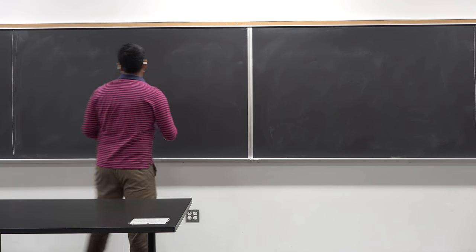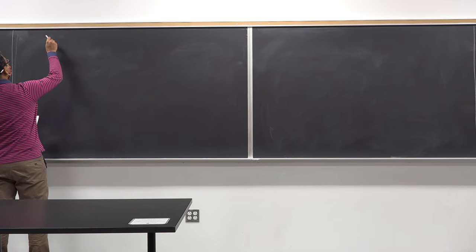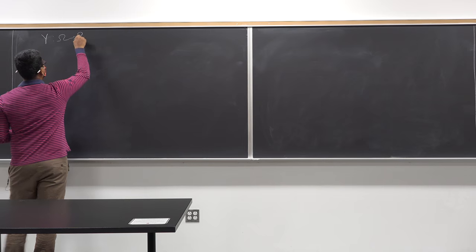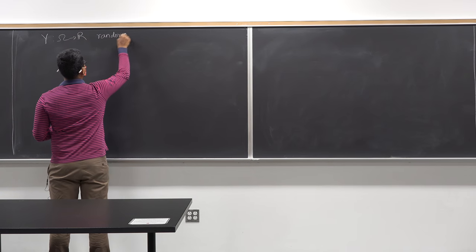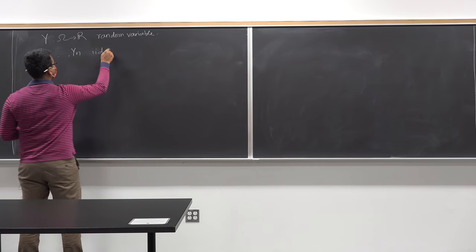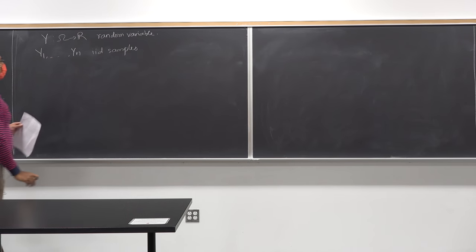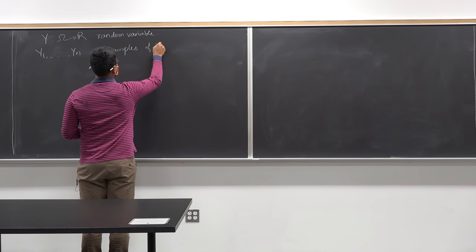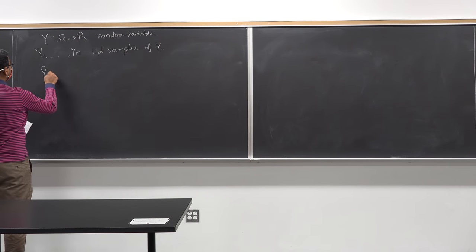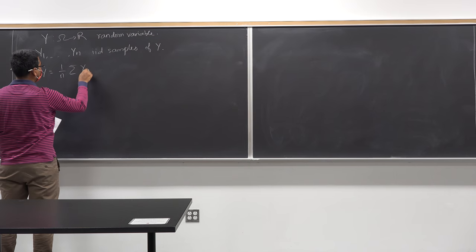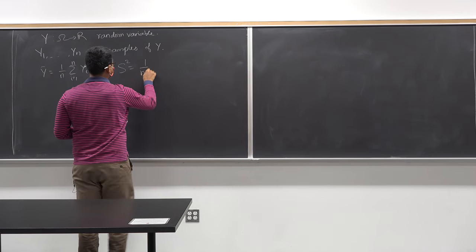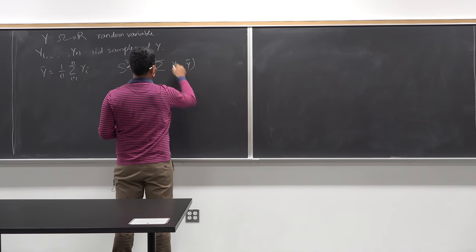Let me start from the beginning. We have y, a function from omega to R — a random variable. We have y1 through yn as iid samples of y. We defined y-bar as (1/n) times the summation of yi for i equals 1 to n, and we defined s-squared as (1/(n−1)) times the summation of (yi − y-bar) squared.